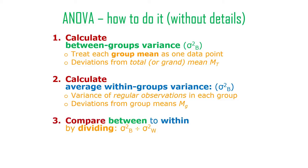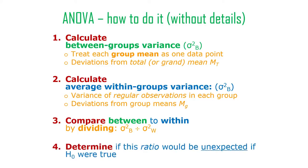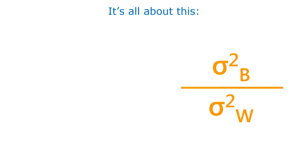Then you compare the between-groups variance to the average within-groups variance. One of the classic ways to compare things like this is to divide one by the other. So we divide the between-groups variance by the within-groups variance, and that gives us one number. There's a sampling distribution of that number. That's how we determine whether the difference between means was greater than can be explained by sampling variation alone. If that ratio is big enough that it would be unexpected under the null hypothesis, then we reject the null hypothesis — this is unlikely if the null hypothesis were true, therefore we reject it.